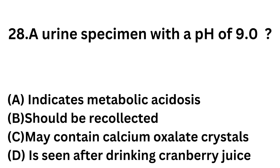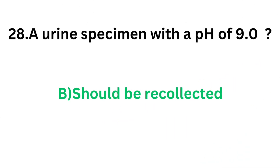Question number 28: A urine specimen with pH of 9 — Option A: Indicates metabolic acidosis. Option B: Should be recollected. Option C: May contain calcium oxalate crystals. Option D: Is seen after drinking cranberry juice. If a pH of 9.0 is noted for a urine sample, the correct answer is Option B, should be recollected. A urine sample with pH of 9 should be recollected.